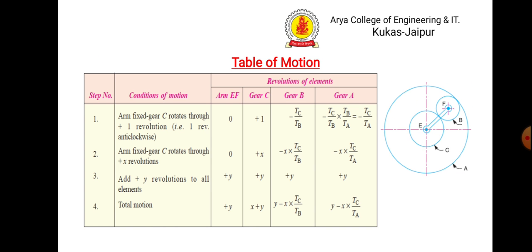Constructing the table: arm fixed, gear c (the sun gear) rotates through +1 revolution — arm = 0, gear c = +1, gear b = −t_c / t_b (clockwise, so negative sign), gear a = −(t_c / t_b) × (t_b / t_a) = −t_c / t_a. For row 2, multiply with x. For row 3, add +y. Row 4 is the sum of rows 2 and 3.